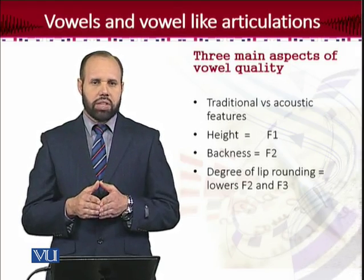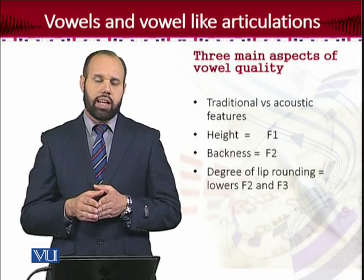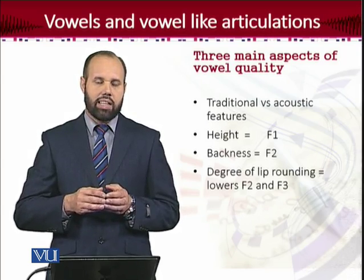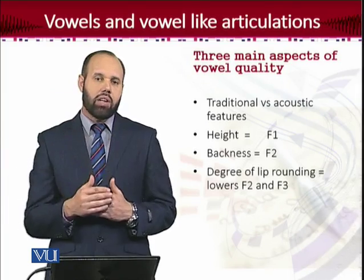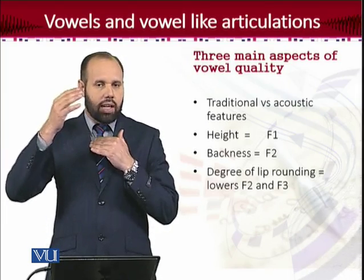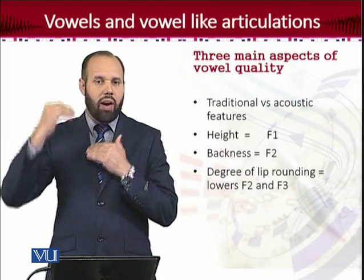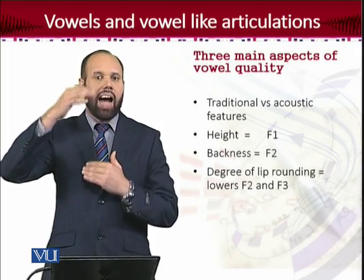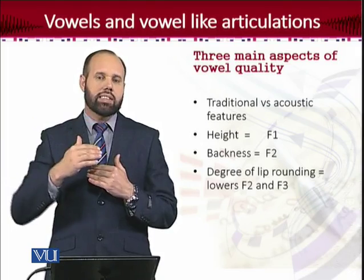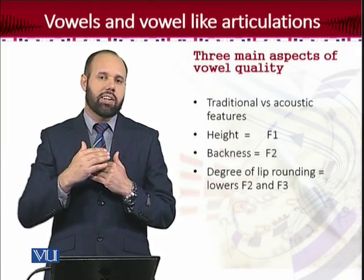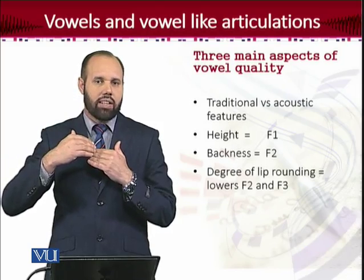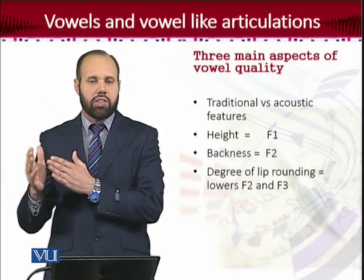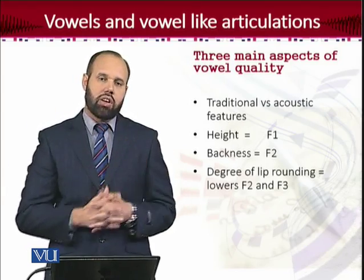We discussed within the acoustic portion of this course that F1 is related to the position of tongue in terms of low and high. We found that there was an inverse relationship between F1 and the height of tongue — because the lower F1 is, the higher the tongue is. And when F1 is increasing, the tongue position is going down. So increased F1 means a lower tongue position. That was our connection between the acoustic features and the traditional features of our description of vowels.